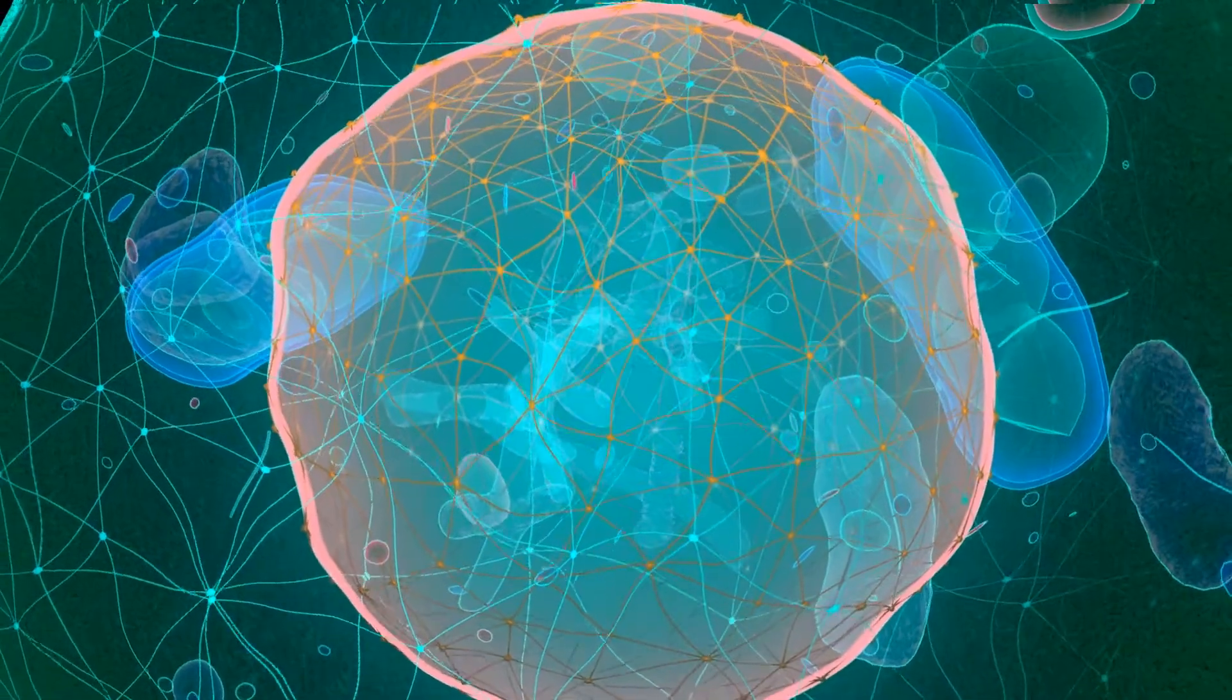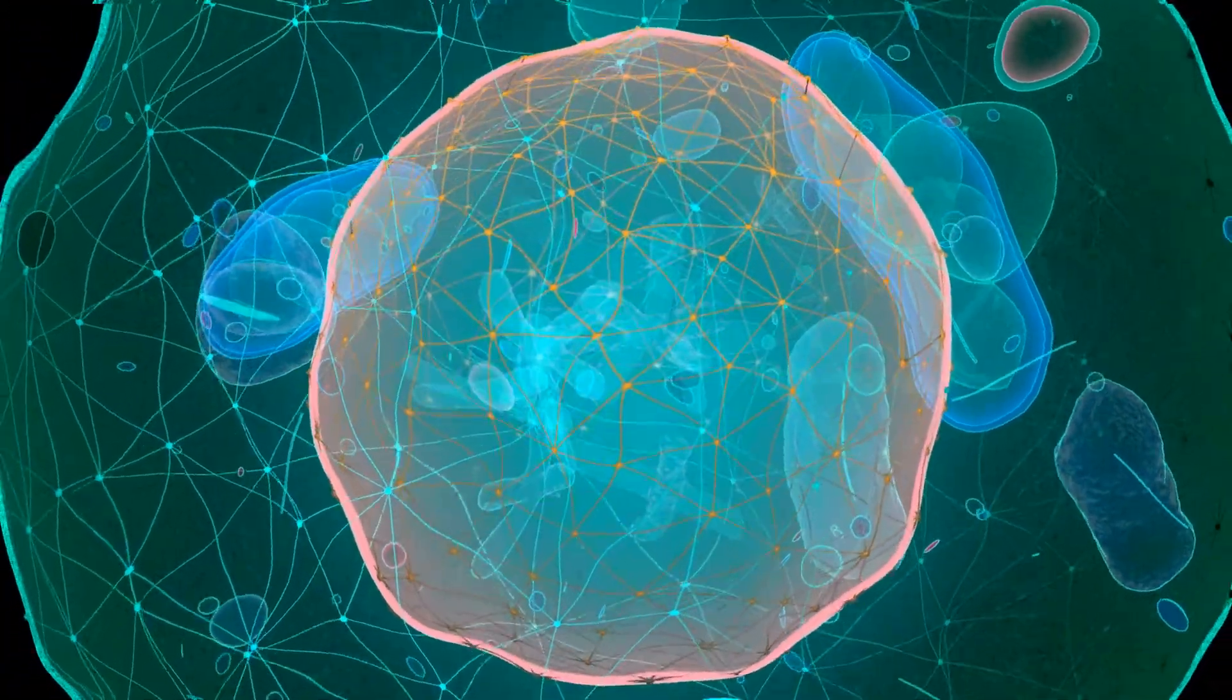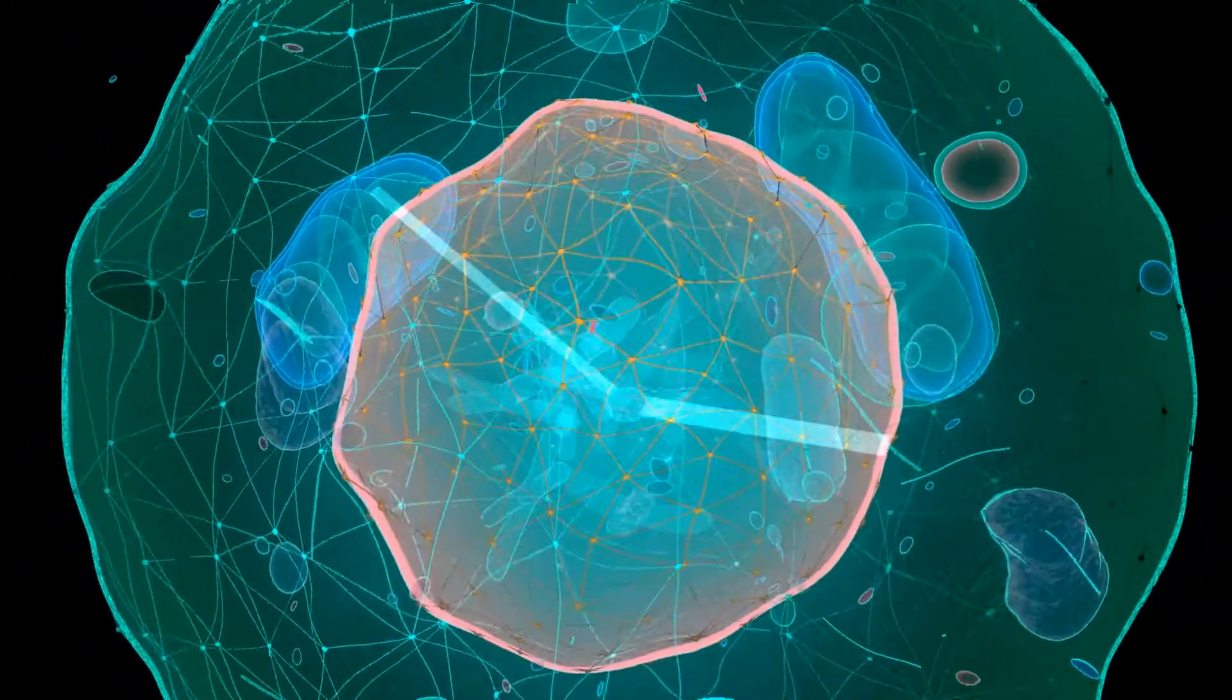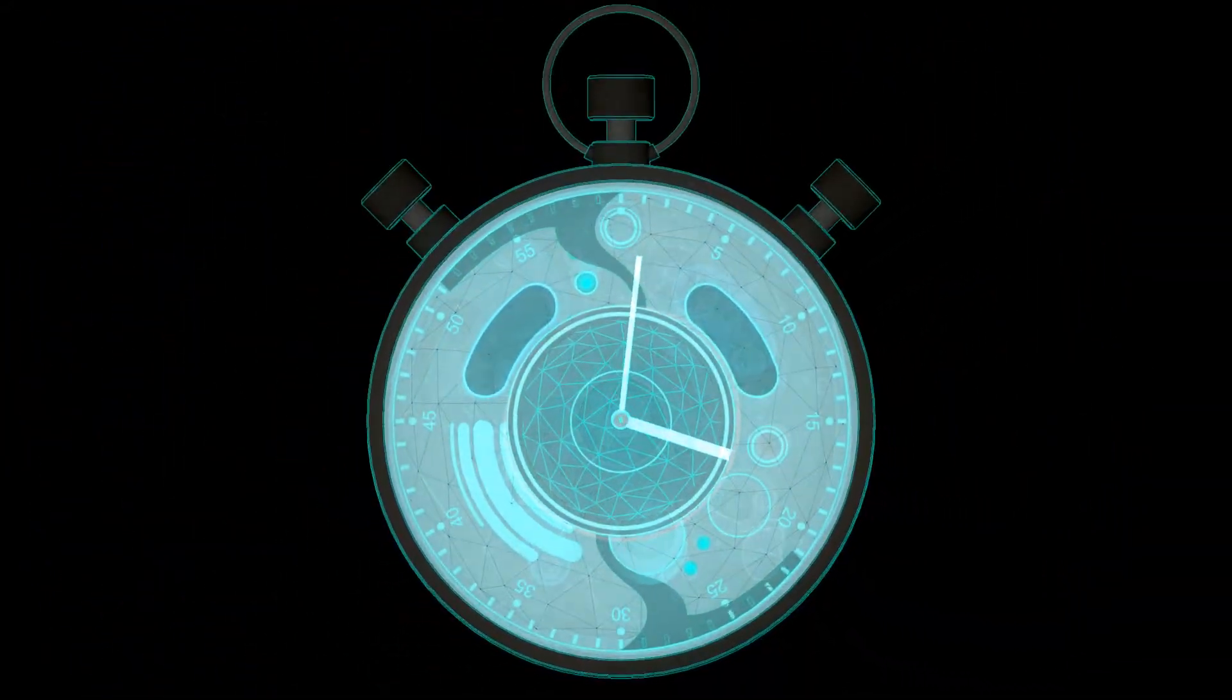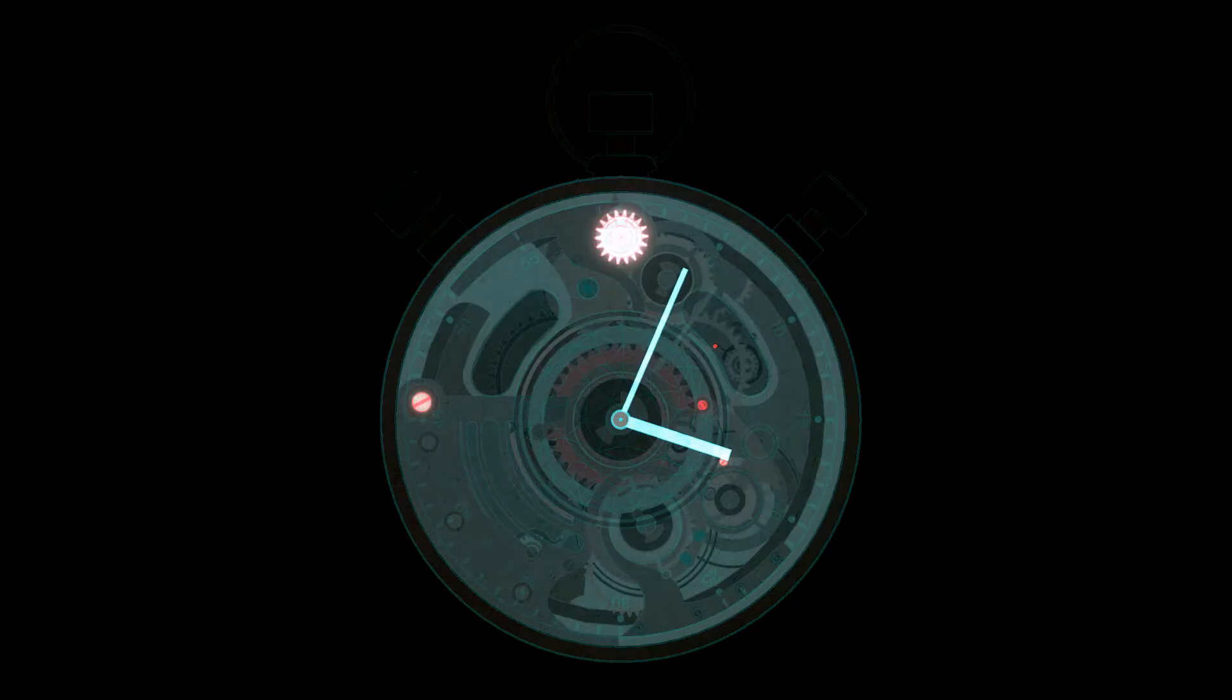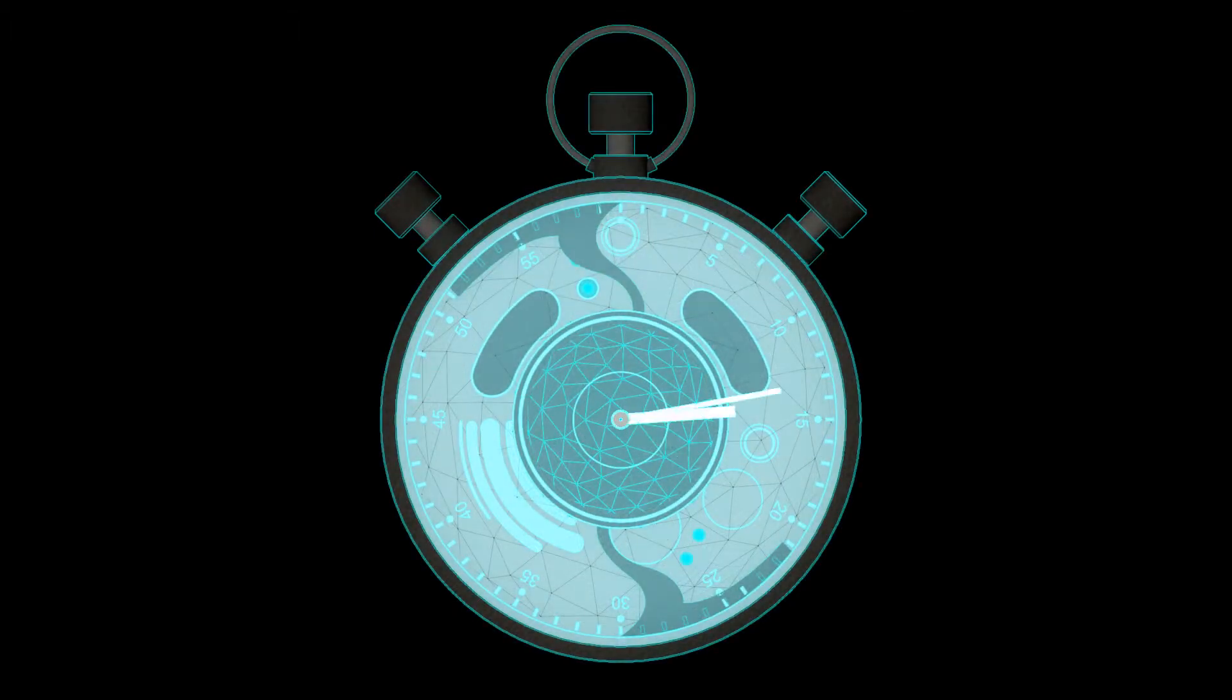But why is aneuploidy so frequently present in cancer cells? Well, let's compare a human cell to a smoothly running machine. When all of a sudden it is presented with a few extra parts, the machine will stutter and eventually halt or run out of control. This is what we think happens to the cell machinery.